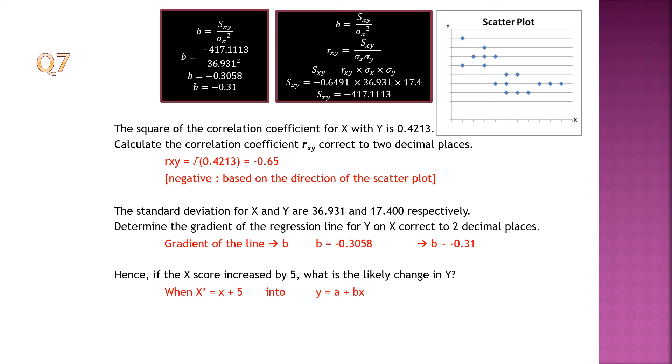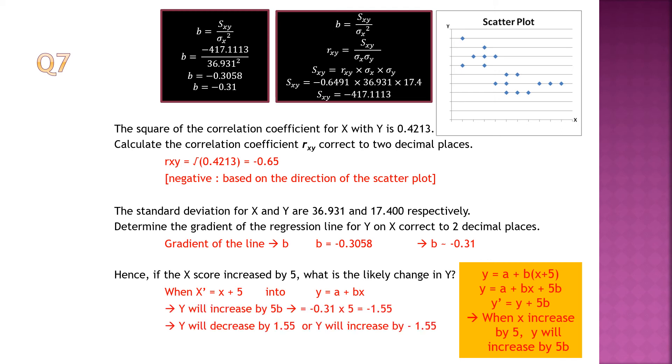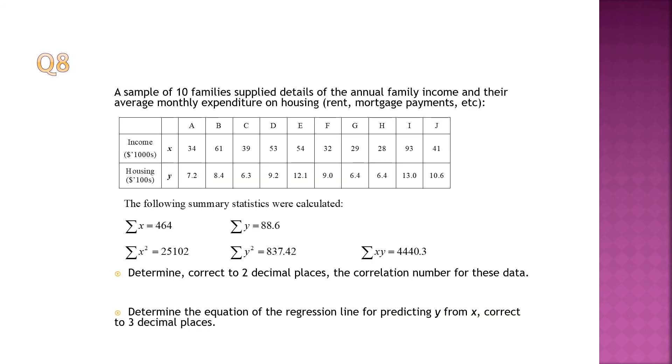They've given you standard deviation of X and Y. That shouldn't be a problem, right? Use the formula as you see in the box there to find B. Now, if X is increased by 5, what I just taught you just now is the same. If X is increased by Y, put it into the formula. Now, you don't have the numbers, right? You just use A plus B X. A plus B bracket X plus 5. Then you open a bracket, you will get increased by 5B. So, increase by 5B, you just take 5 and times with your gradient. You will see when Y will decrease by 1.55. Why decrease? You must see that as a negative sign. That's why it is decrease.